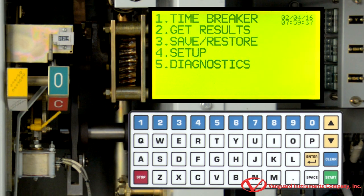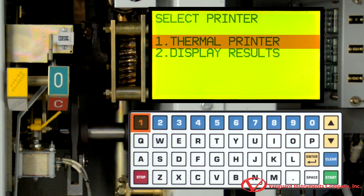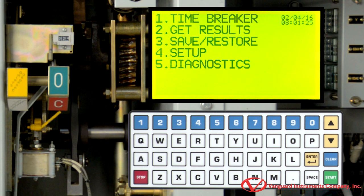We are now presented with multiple options for printing the test results. We are going to select Plot Full Chart by pressing the 2 key. Now, press the 1 key to select Thermal Printer. And now, the test results are going to be printed on the unit's thermal printer. Once printing is completed, you will be returned to the main menu.